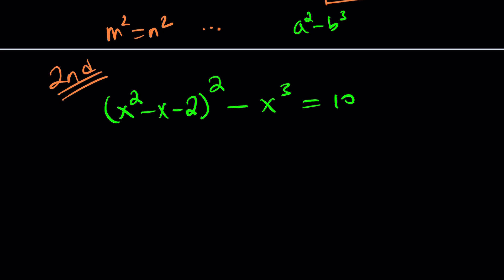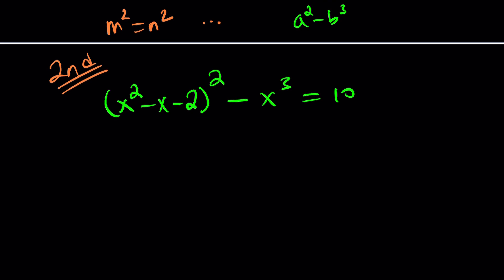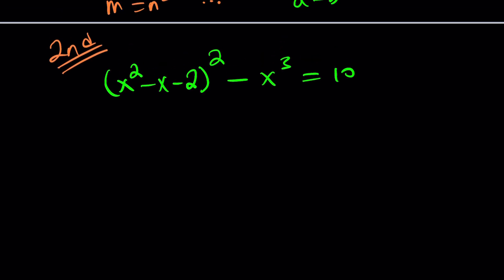So instead, we should do something else. We're going to go ahead and manipulate this equation in such a way that we can take advantage of the perfect cube and the perfect square at the same time. Now, how can that be done? And where does that come from? I'll tell you. The clue is going to come from 10.